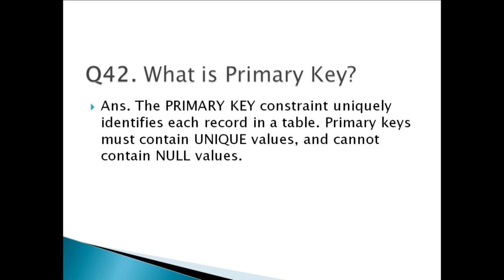Question forty-two: What is a primary key? The primary key constraint uniquely identifies each record in a table. Primary keys must contain unique values and cannot contain null values. A table can have only one primary key, and this primary key can consist of single or multiple columns (fields).